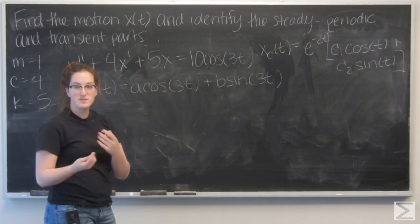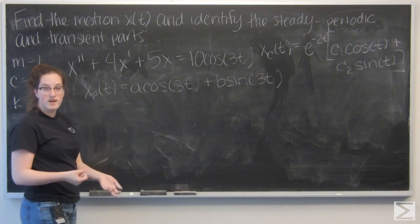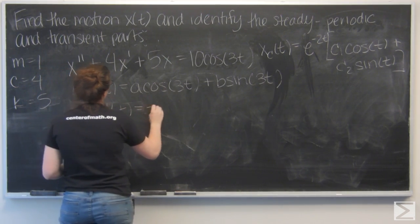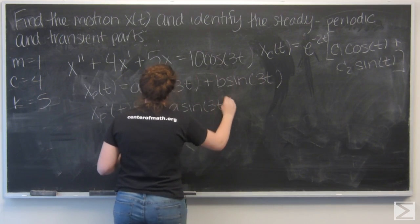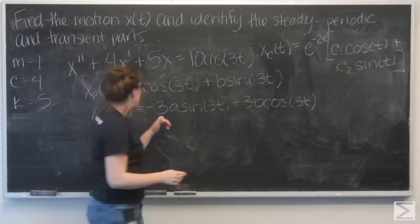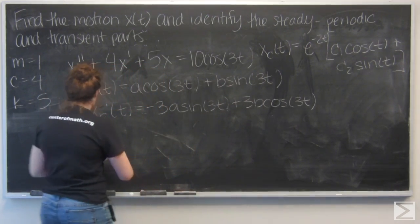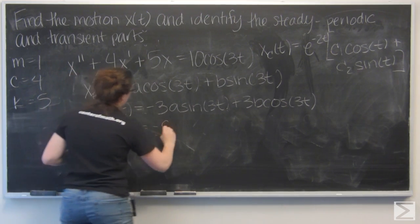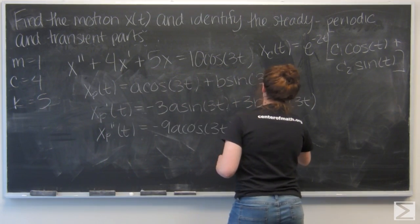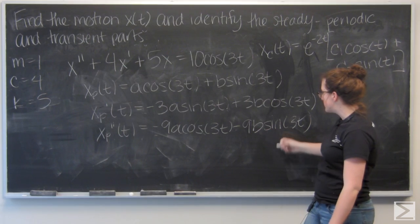So I'm going to use a and b as my coefficients, but they could represent any real number. And I want to plug xp into this second order equation. So I need to find its first and second derivative. I'm going to go ahead and do that. So the first derivative is negative 3a sine of 3t plus 3b cosine of 3t. And the second derivative is negative 9a cosine of 3t minus 9b sine of 3t.